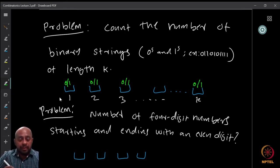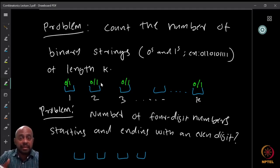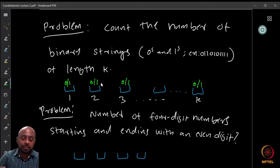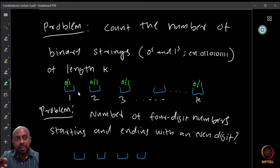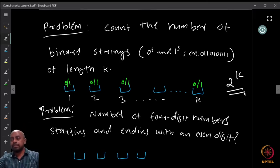Since I have two choices at each of the k positions, and these choices are independent, I multiply: 2 × 2 × … × 2 (k times) = 2ᵏ. Therefore the number of binary strings of length k is equal to 2ᵏ.